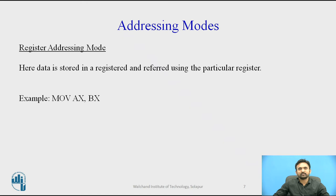The next one is register addressing mode. In this mode, operands are specified using registers. This addressing mode is normally preferred because the instructions are compact and the fastest executing of all instruction forms. Registers may be used as source operands, destination operands, or both. For example: MOV AX, BX.